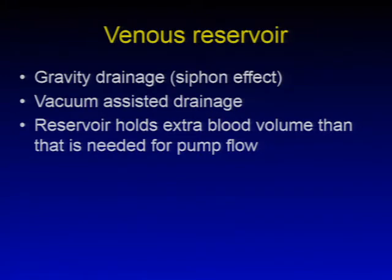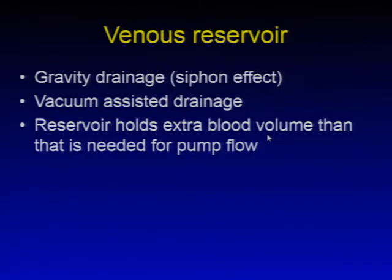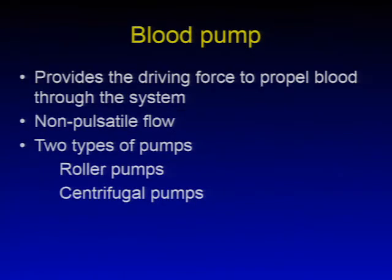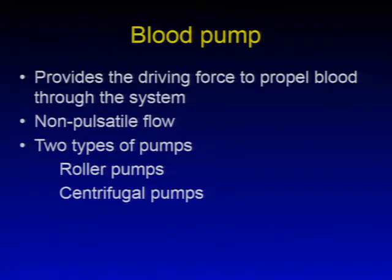The venous reservoir is the first key component of the CPB circuit. Venous drainage is typically by gravity and siphon effect; vacuum-assisted drainage can be used to assist drainage. The basic function of the reservoir is to hold extra blood volume beyond what is needed for pump flow. The second component is the blood pump. There are two types: a roller pump and a centrifugal pump. Most pumps provide non-pulsatile flow as the driving force to propel blood throughout the CPB system.